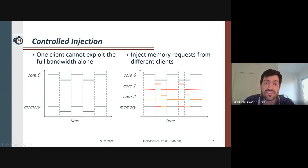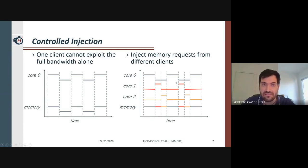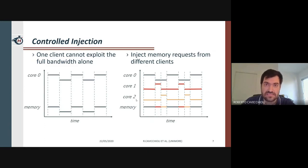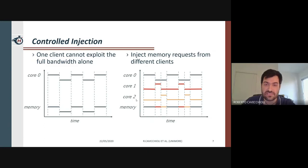The trickiest part here is to define the correct amount of data that core1 and core2 should be allowed to request without increasing the latency experienced by core0. We therefore need to characterize our system.